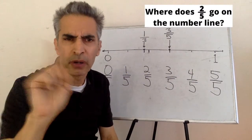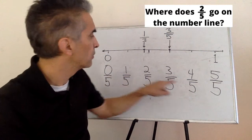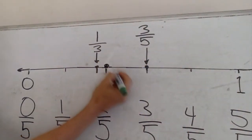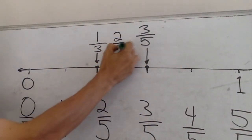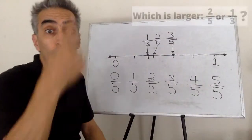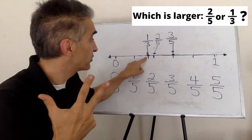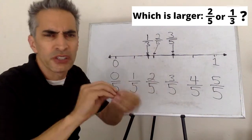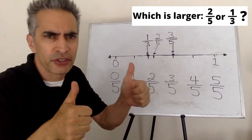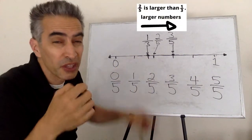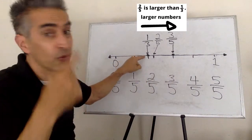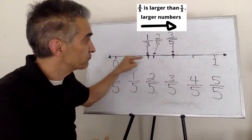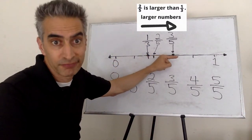Where is two-fifths? Right there. One-third goes right there. Two-fifths goes right there. Which number is larger? Two-fifths is a little bit larger than one-third because the numbers increase as you head to the right on the number line.